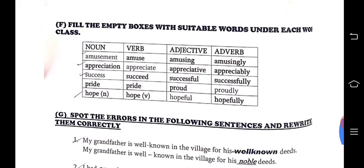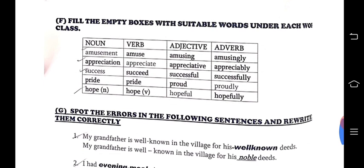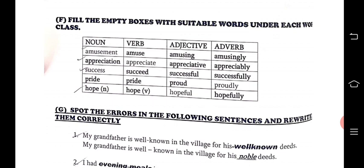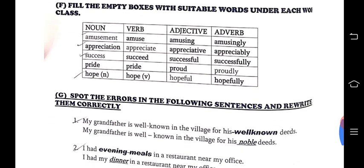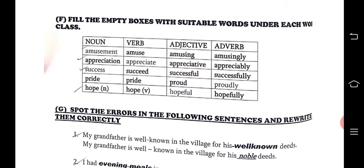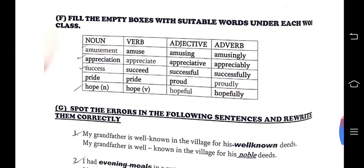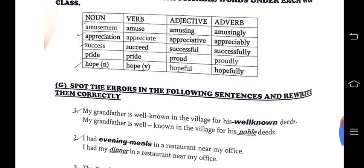Here they have given words with different grammatical function. They will give one word and you make it into different forms. For example, tear — the tears rolled in my eyes (noun); don't tear your paper (verb). A particular word is used as noun, verb, adjective like that. Amusement (noun), amuse (verb), amusing (adjective), amusingly (adverb). Appreciation, appreciate, appreciative, appreciatively. Success, succeed, successful, successfully. Pride, pride, proud, proudly. Hope, hope, hopeful, hopefully.